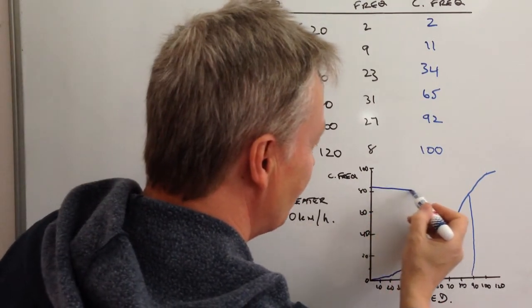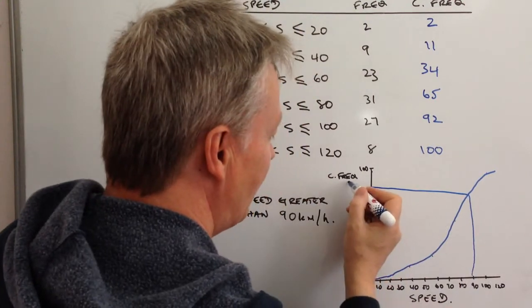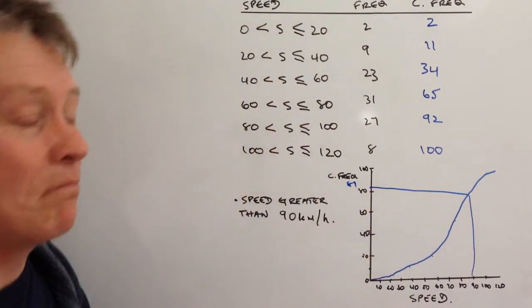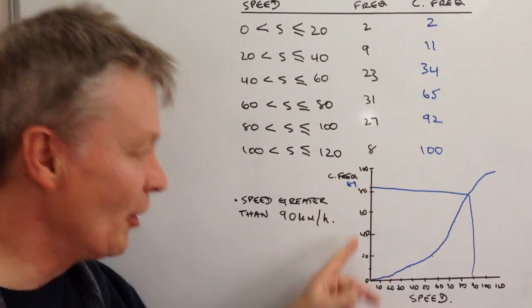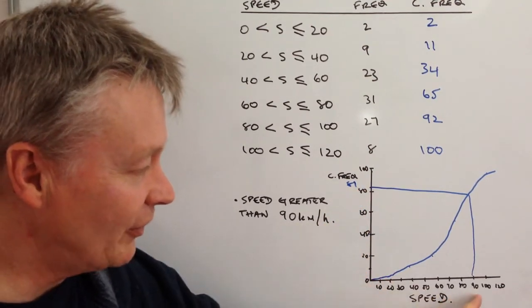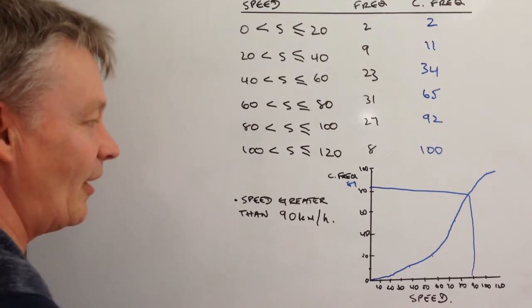But apparently, according to the information I've got, it's actually 81. So what it means is that 81 lorries go below the speed of 90 miles per hour or 90 kilometers per hour.